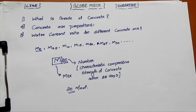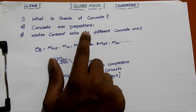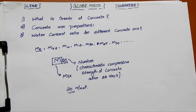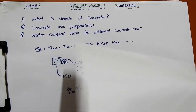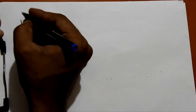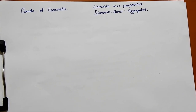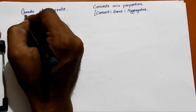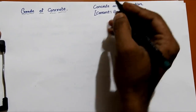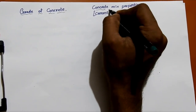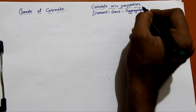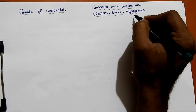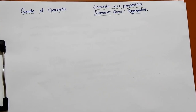This is called grade of concrete. Next we will see what is concrete mix proportions. Concrete mix proportion is based on cement, sand, and aggregates.